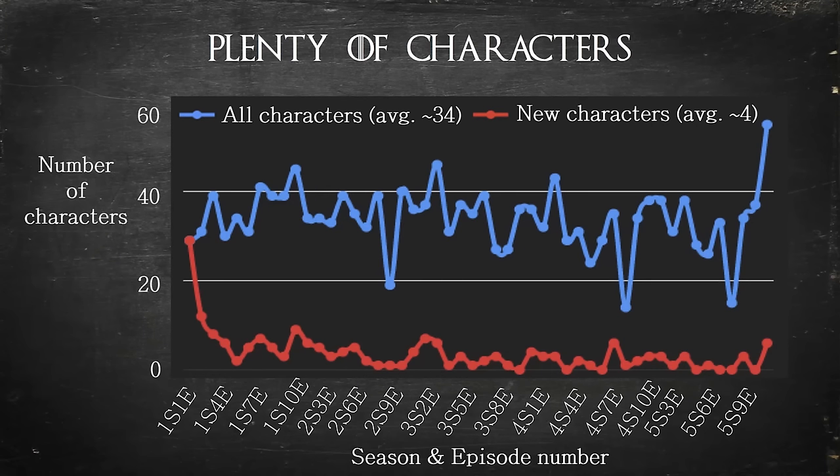Once we started aggregating the data, we all of a sudden found new things about a story we thought we already knew. And there was plenty to discover since there are plenty of characters — as a matter of fact, there are 2,048 characters in the story. On the HBO show, for instance, on each episode on average there are 34 characters that appear, and four of these are newly introduced characters. Sometimes a character is introduced in an episode and killed off in that same episode.